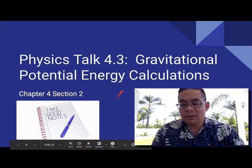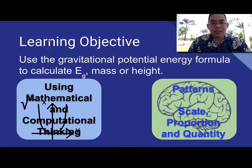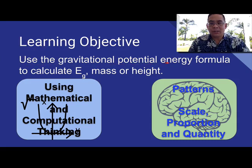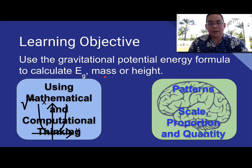So let's work on taking some good notes today. Alright, so our learning objective is to use the Gravitational Potential Energy Formula to calculate either EG, the mass, or the height. So as long as I give you 2 out of the 3, you should be able to calculate either one of those 3.